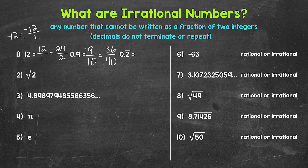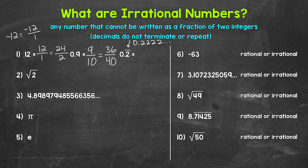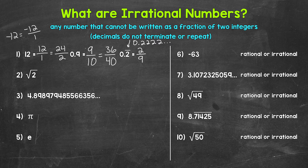Lastly, we have 0.2 repeating. The bar over the 2 means we have 0.2222 and this continues on forever. Any repeating decimal is rational — it can be written as a fraction of two integers. For example, 0.2 repeating can be written as 2 over 9 or 6 over 27.